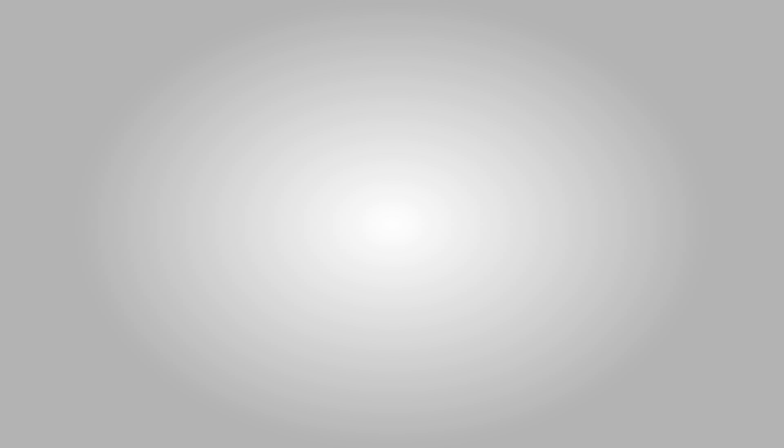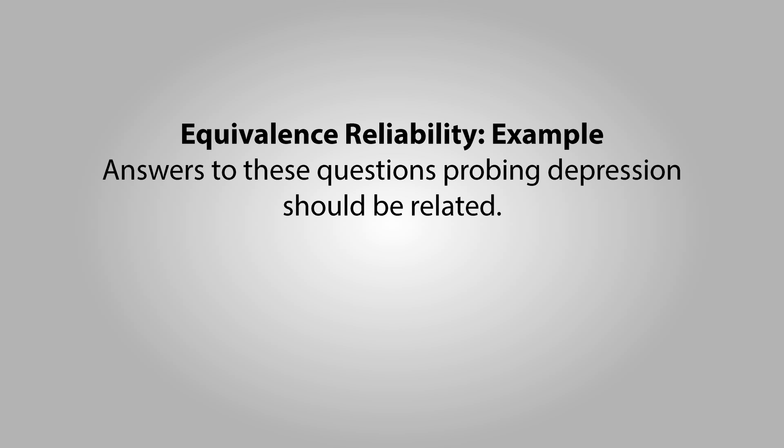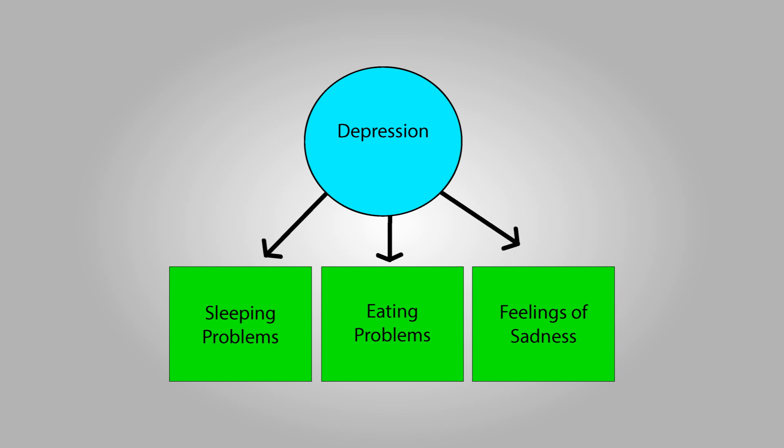The third type of reliability is equivalence reliability, which is important when you're using multiple questions to measure the same underlying concept. For example, in my depression questions, I might ask: Do you cry often? Do you often feel sad? Do you find it hard to get out of bed? Do you often have no appetite or do you overeat? Do you have suicidal thoughts? If these questions have equivalence reliability, they'll tend to be correlated — people who answer yes to one are more likely to answer yes to others.